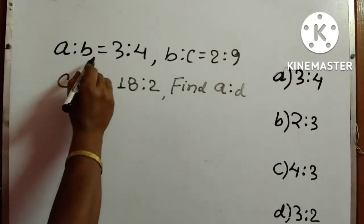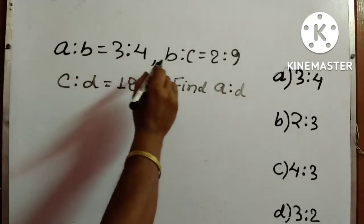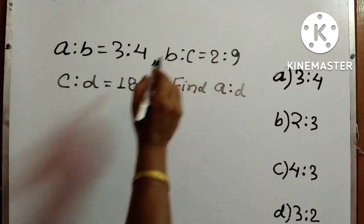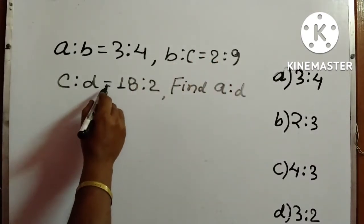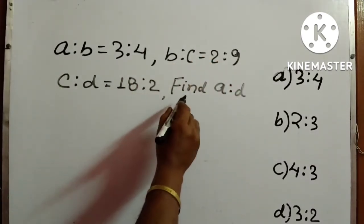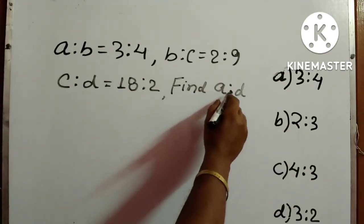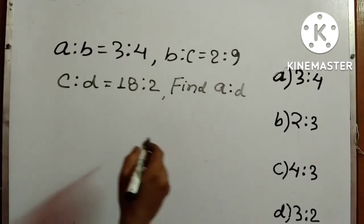In this question, A is to B equals 3 is to 4, B is to C equals 2 is to 9, and C is to D equals 18 is to 2. We need to find A is to D, and four options are given.